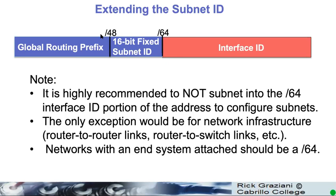Your subnet ID will be anywhere between your global routing prefix and your 16-bit subnet ID. The only exception would be for network infrastructure, router-to-router links, or router-to-multilayer switch links. And then, even then, slash 64 is really okay. But networks with end systems attached — your LANs — slash 64s.